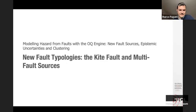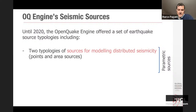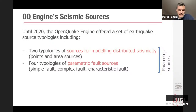The new fault source typologies are the kite fault and the multi-fold source. A kite fault is called this way because the mesh created with these faults is made of quadrilaterals that resemble, to a certain extent, the shape of a kite. Until 2020 in the OpenQuake engine, we had sources used for modelling distributed seismicity — in particular points and area sources — and a set of fault sources: the simple fault, the complex fault, and the characteristic fault, which are called the parametric sources.